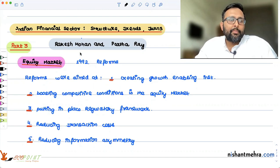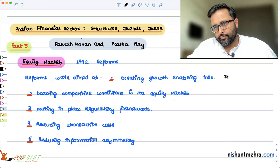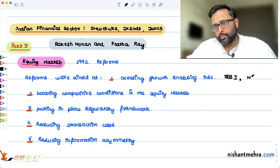Most of these reforms aimed at creating growth enabling institutions. And within that, major ones were SEBI, Securities and Exchange Board of India, and National Stock Exchange, NSE.